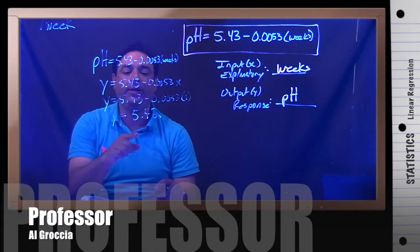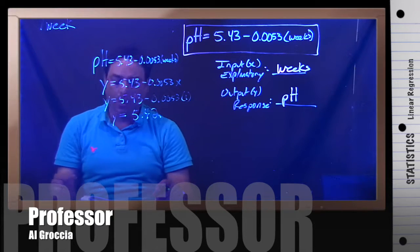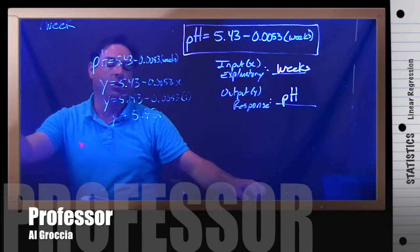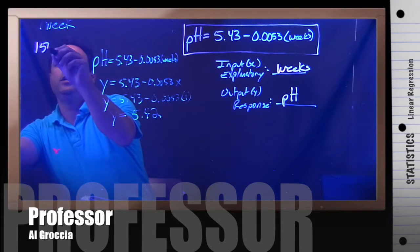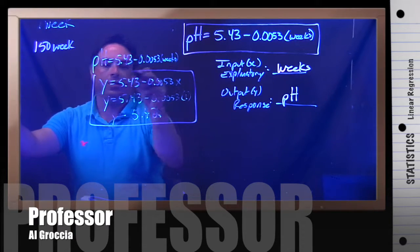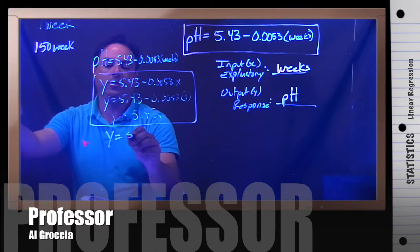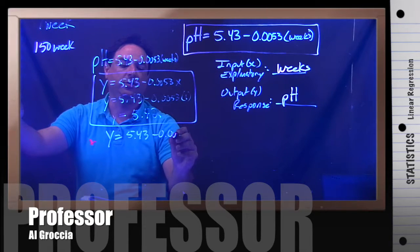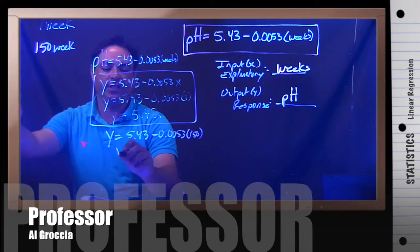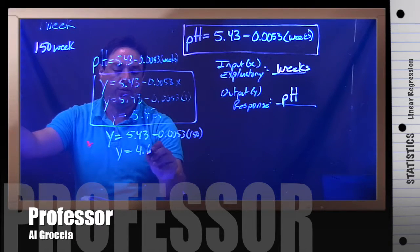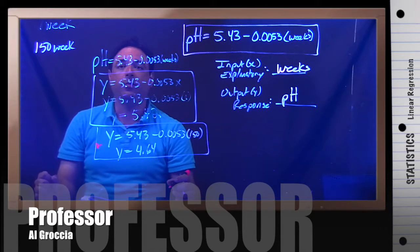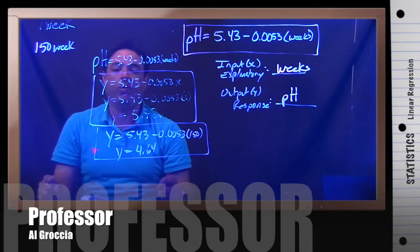We can also find out what will happen at week 150. Same idea: y equals 5.43 minus 0.0053 times 150, which will give us an answer of 4.64. So in a sentence, at week 150, the predicted pH will be 4.64.